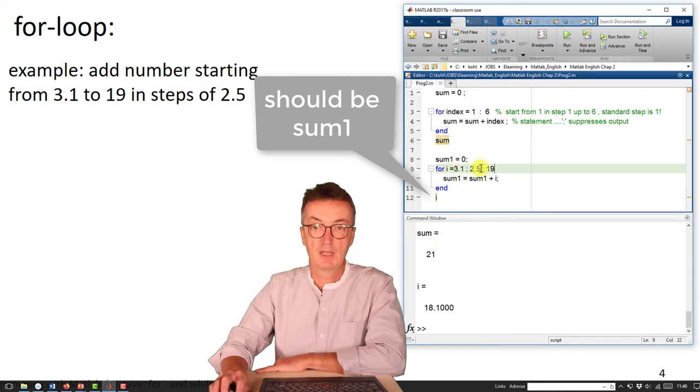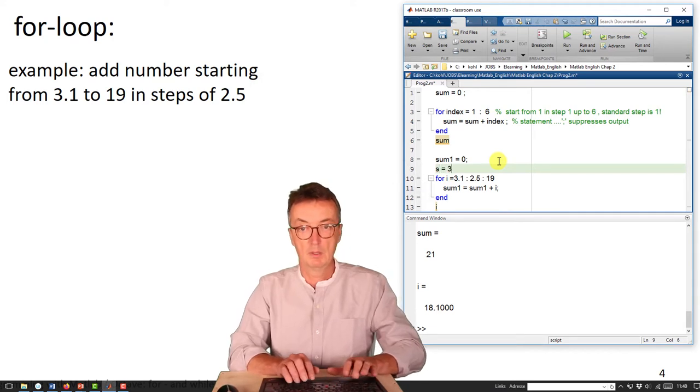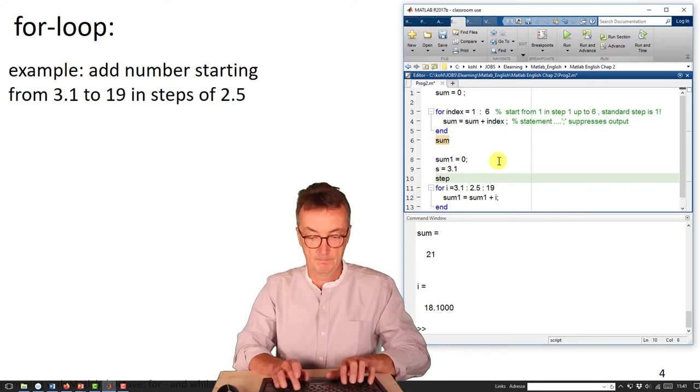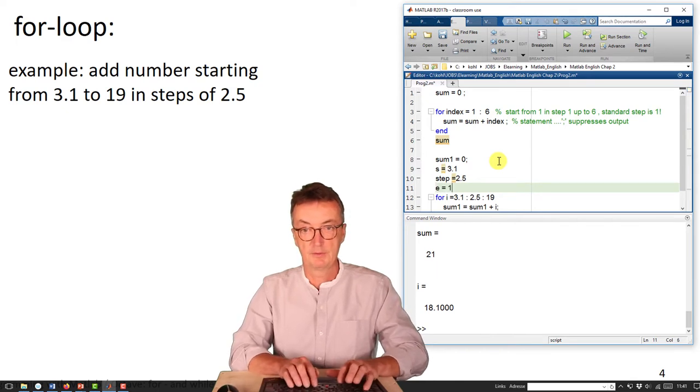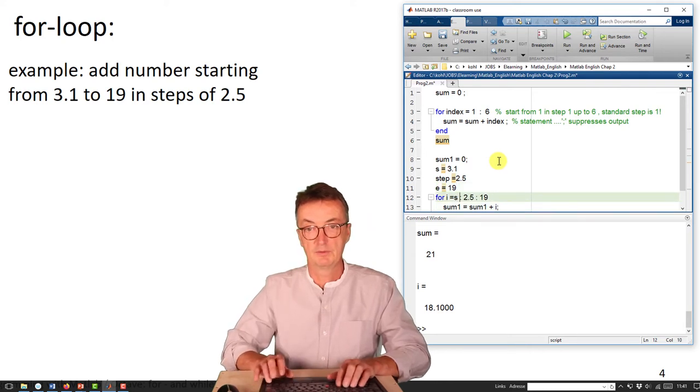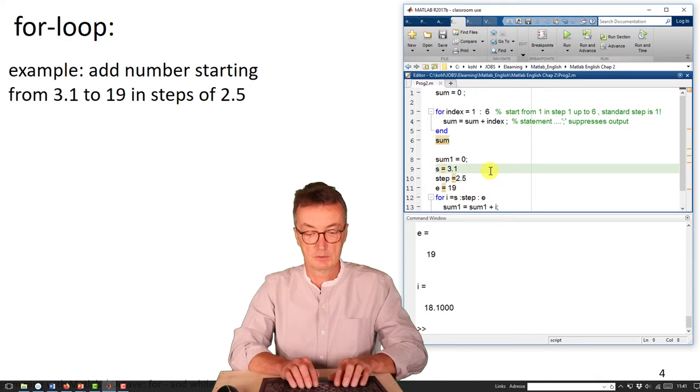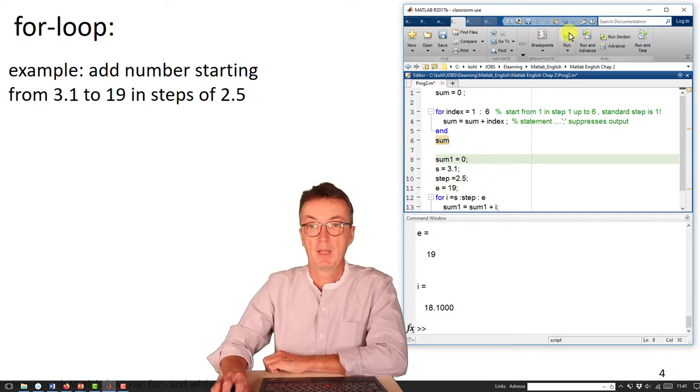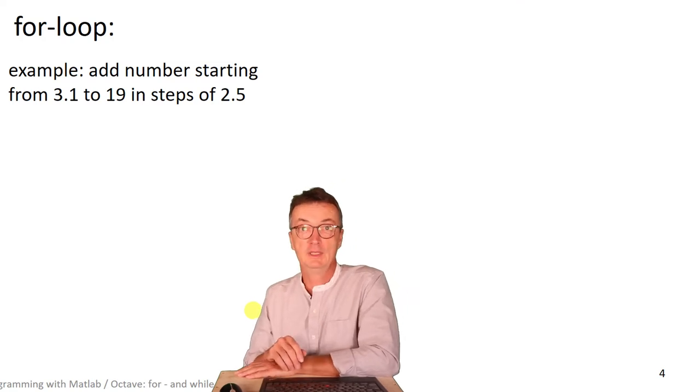So, it's always starting value, step size, end value. You could modify that and take variables instead of printing the numbers. Start, step, and end value is 19. That is, here you would just type in start, step, and end value or variable. And the result is the same. Again, you could just make it look a bit nicer by suppressing the output. But that doesn't change anything in the values actually calculated. Right. Okay. That's more or less all you need to know about the for loop.